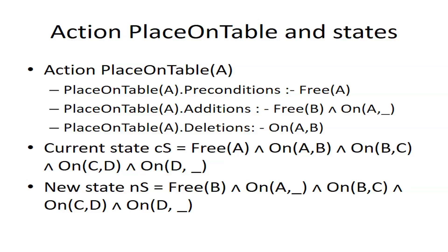Now consider the action 'place_on_top(x, y)' with two arguments. To place x on top of y, the preconditions are that both x and y must be free. The addition is on(x, y) — that is what we want to achieve. The deletion is that y was free and now y is no longer free. This is a simple description of an action in PDDL using the three attributes: preconditions, additions, and deletions.